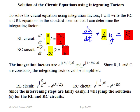Now we use A to construct the integrating factor. The integrating factor is E to the integral of A dt. For the RL circuit, the integrating factor is E raised to the integral of R over L dt. For the RC circuit, it's E raised to the integral of 1 over RC dt. Since R, L, and C are constants, we can integrate immediately.